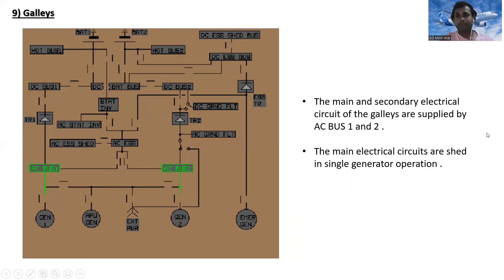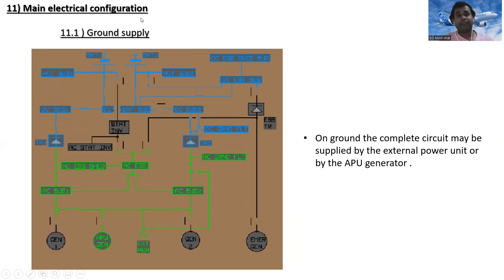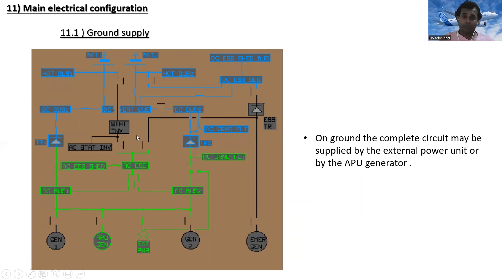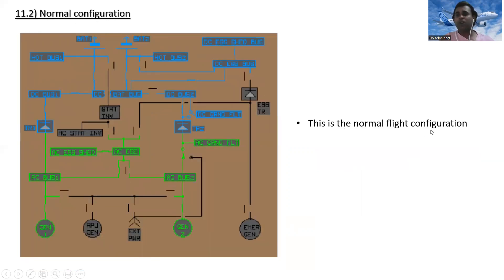Main electrical configurations: for ground supply, the complete circuit may be supplied by the external power unit or by the APU generator. For normal flight configuration, generator one supplies AC bus one, and generator two supplies AC bus two. AC bus one supplies DC bus one through the transformer rectifier, then DC bus one supplies the DC battery bus, which supplies the DC essential bus and DC essential shed bus.